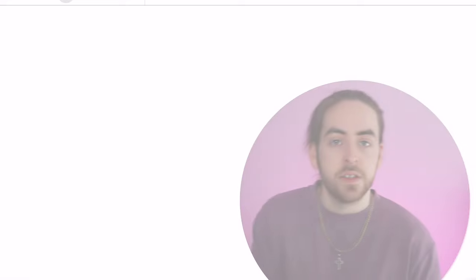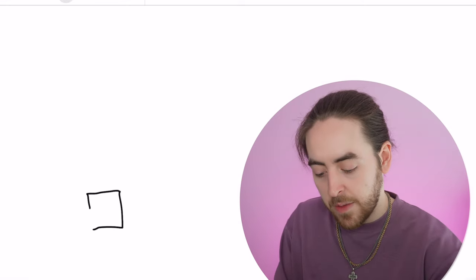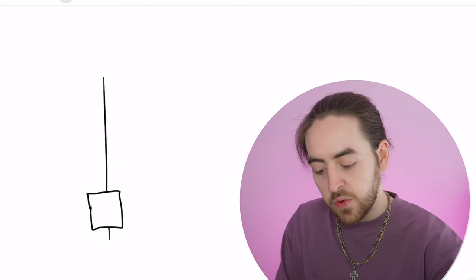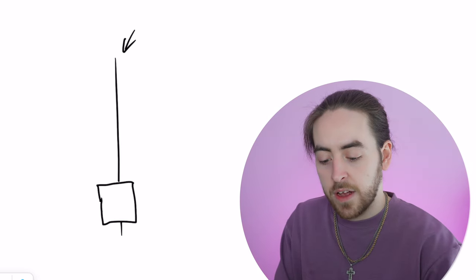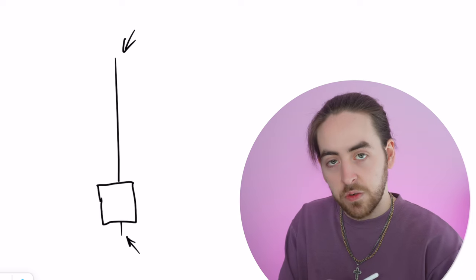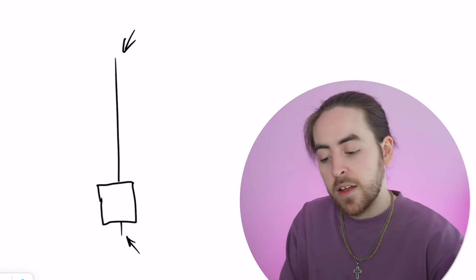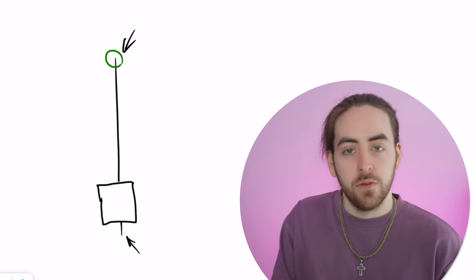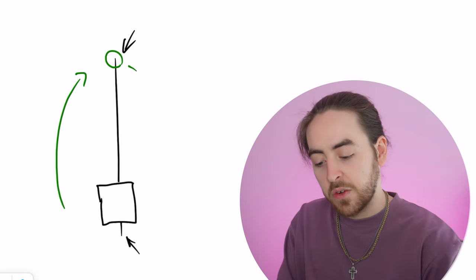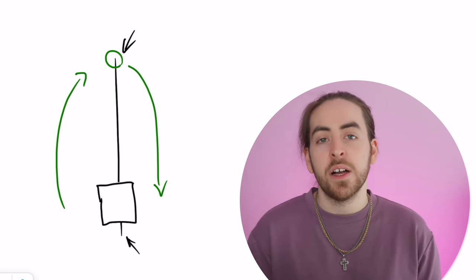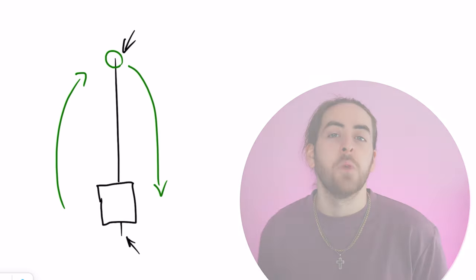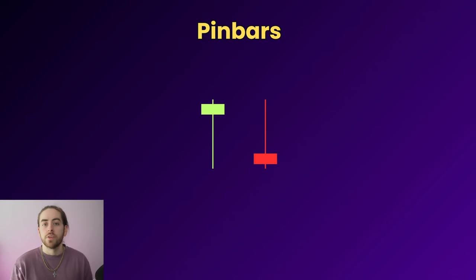The first pattern is the pin bar. A pin bar has a small candle body with an open and closed price very near to each other, a large wick on one side and a small wick on the other. This shows that selling pressure commenced at this level and indicates a reversal. We get both bullish and bearish pin bars — a bullish pin bar shows a reversal from selling to buying, and a bearish pin bar shows a reversal from buying to selling.